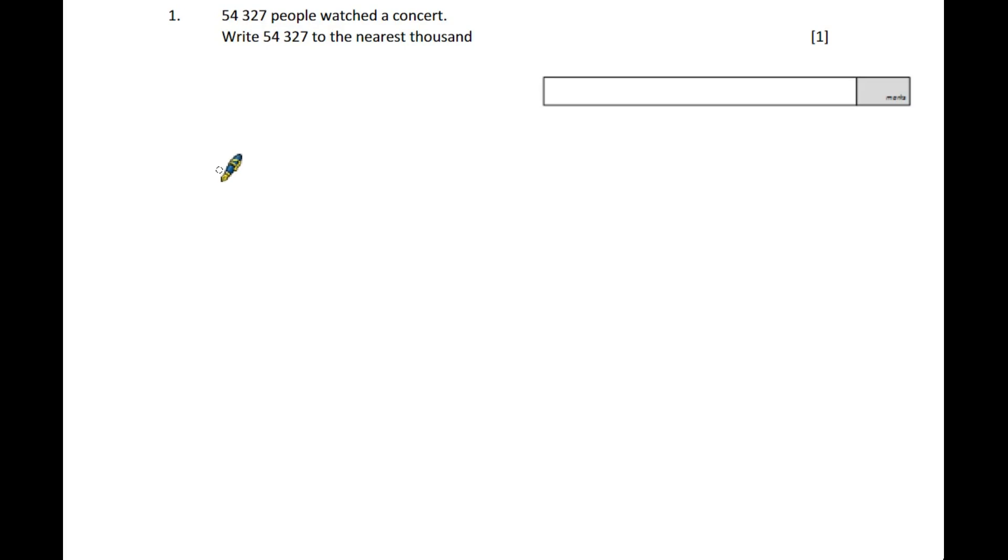Question one: 54,327 people watched a concert. Write that to the nearest thousand. We're rounding to the nearest thousand, so we look for the thousand column - that's the four. The next number is three. Because it's a three, we discard it and this remains at 54,000.